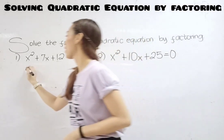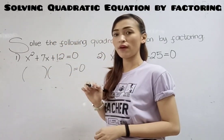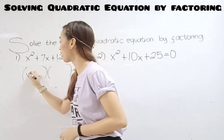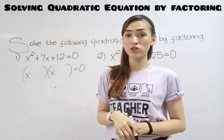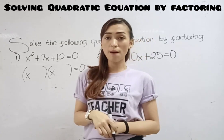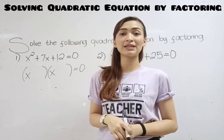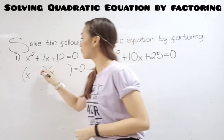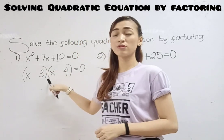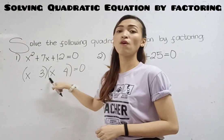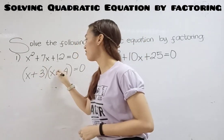So first, factor x squared. The factors of x squared is x times x. Next, think of two numbers — when we multiply them the answer is 12, and if we add them the answer is positive 7. For example, we have 3 and 4: 3 times 4 is 12, and 3 plus 4 is 7. So we have positive 3 and positive 4.